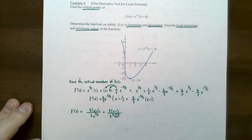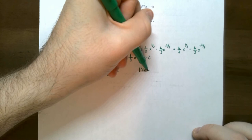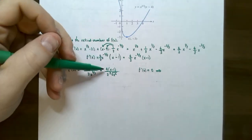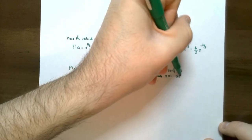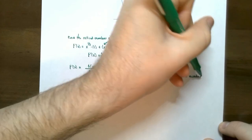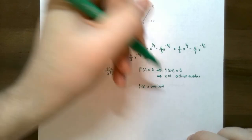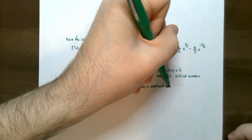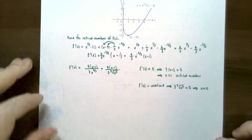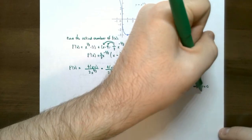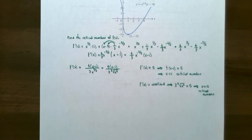That's the first derivative. We know we'll have critical numbers when this derivative equals zero — the derivative is zero if the numerator is zero. So four times x minus one equals zero gives x equals one — that's one critical number. But it's not the only one. Keep in mind that if the derivative is undefined, you also have a critical number. The derivative is undefined if the denominator is zero: three times the cube root of x squared equals zero, and you'll find x equals zero. That is also a critical number. So we have two critical numbers: one and zero.